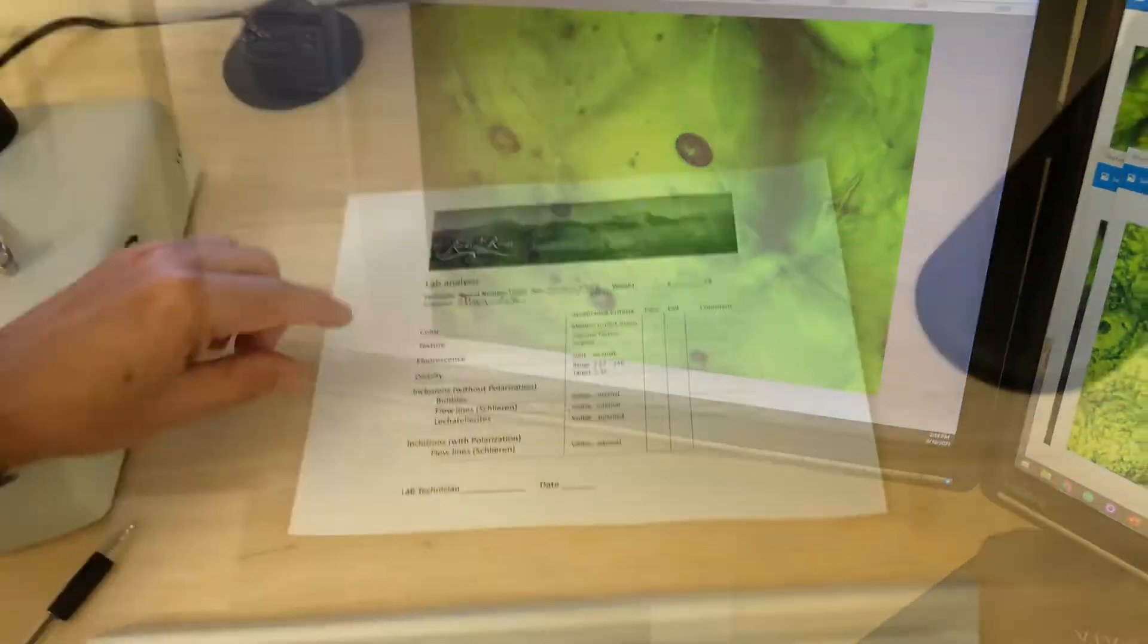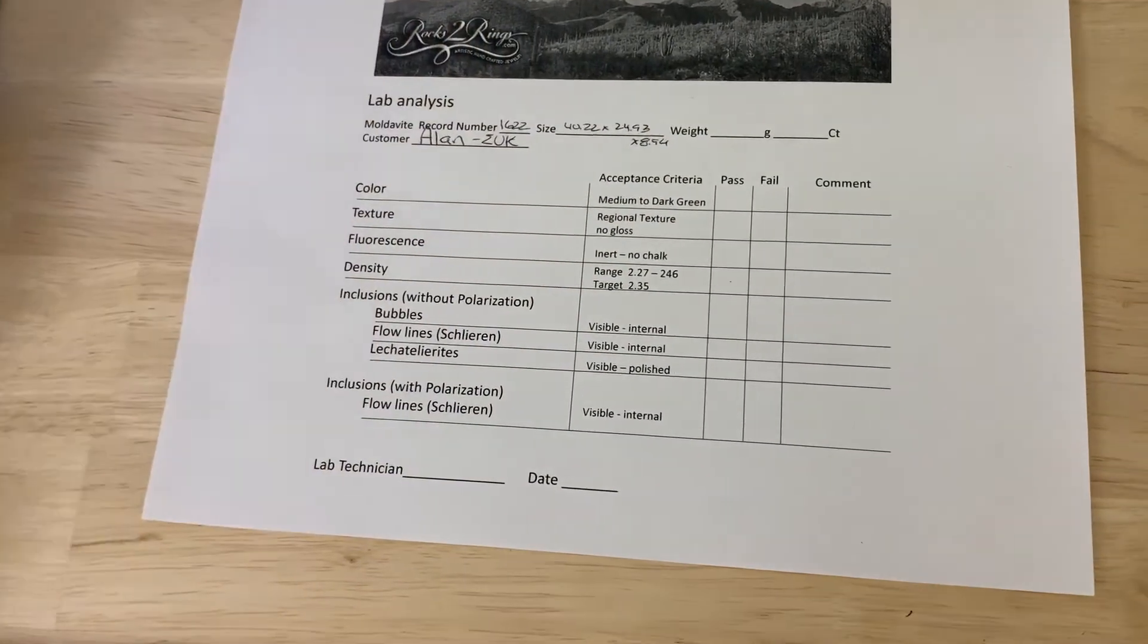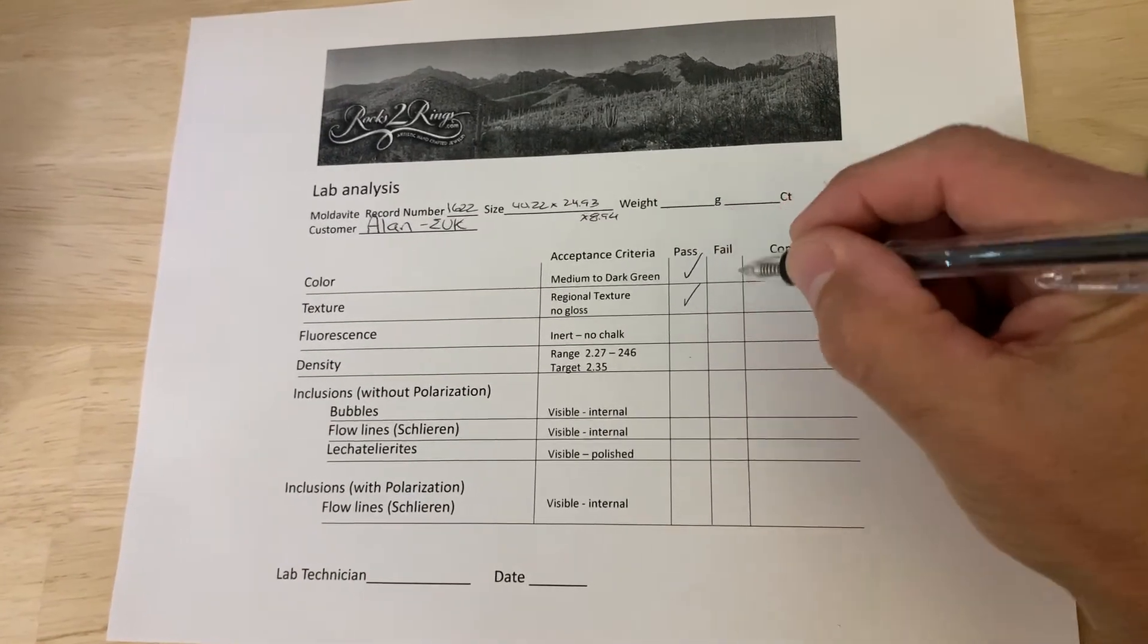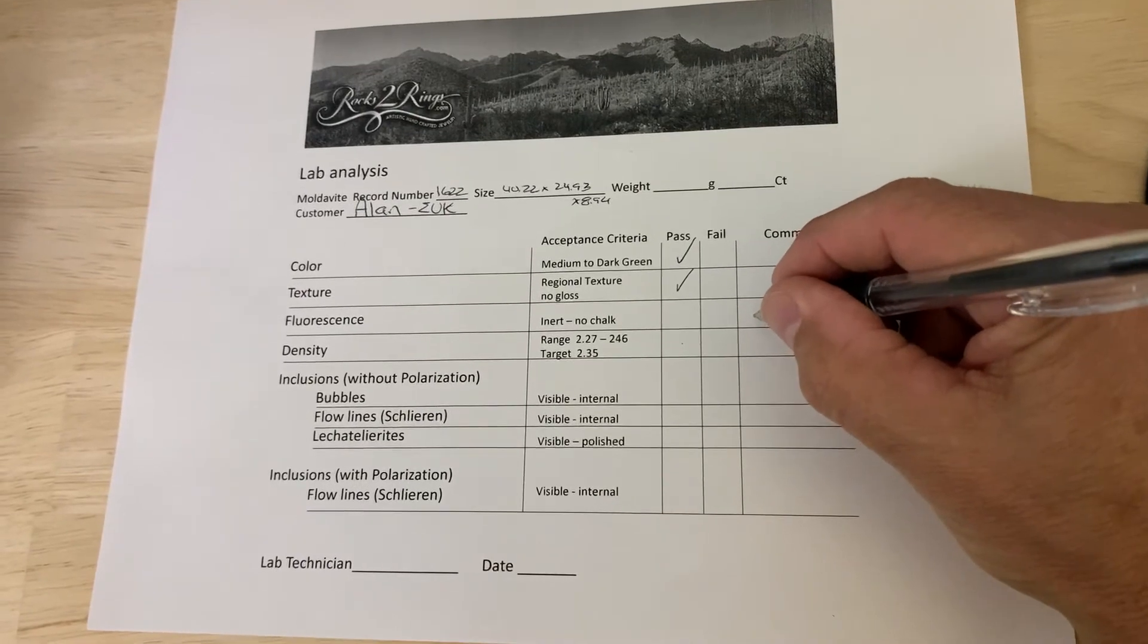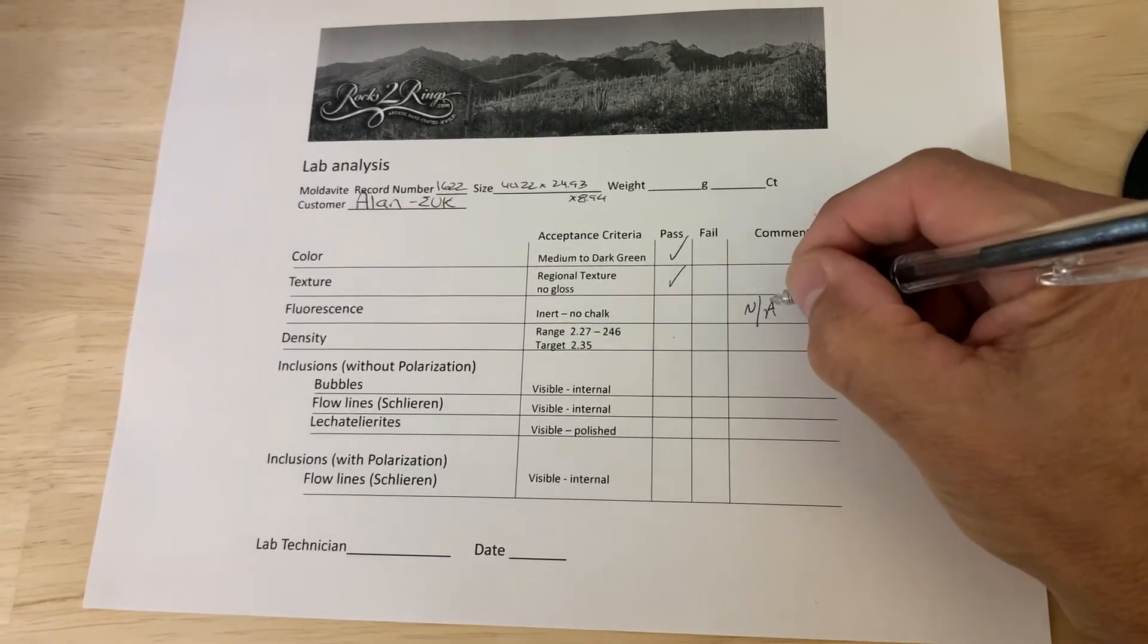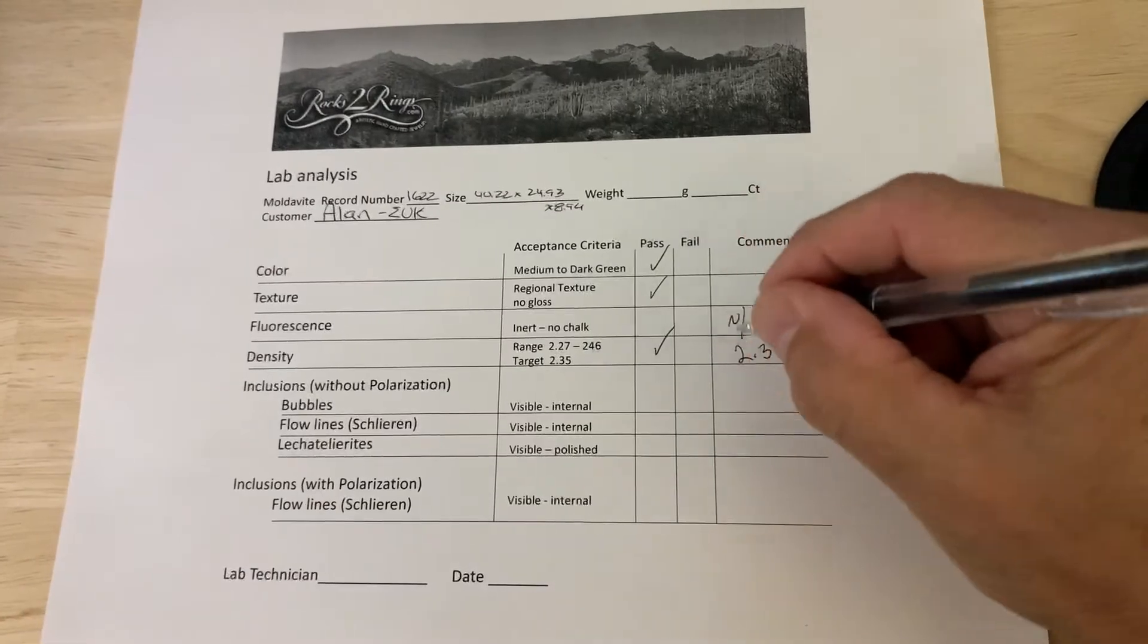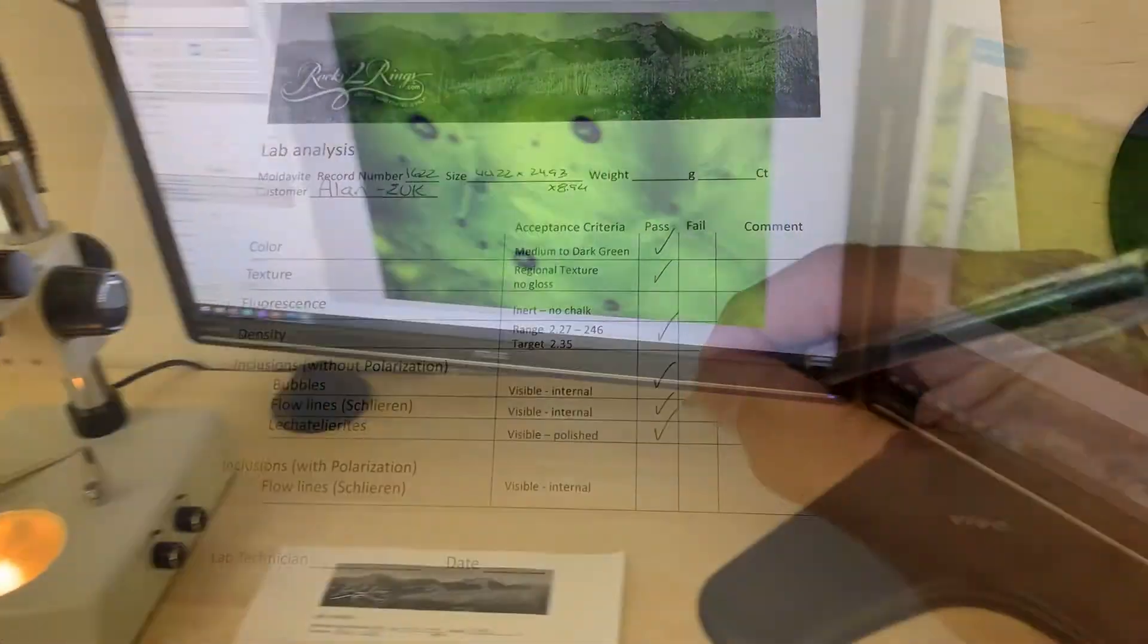Let's walk through it. We checked color—it was medium to dark green, that's a pass. We checked texture, and it is a southern Bohemian texture. We did not check fluorescence—you need to do that before you get it wet. We checked density and we were at 2.37, that's a pass. And we checked for bubbles, flow lines, and wigglies—they're all present.